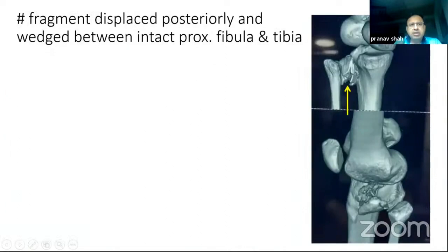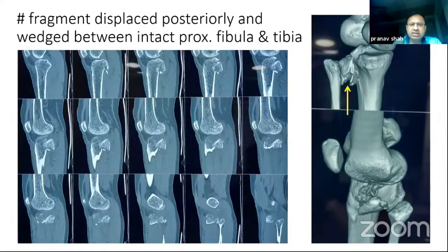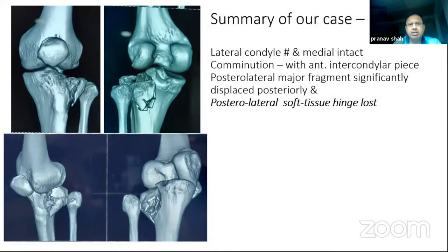The fragment has displaced posteriorly and is wedged between the intact proximal fibula and tibia. On the sagittal CT scan, we can also see an element of intercondylar fracture, which looks undisplaced or minimally displaced, but on 3D CT scan the intercondylar fracture is visible.